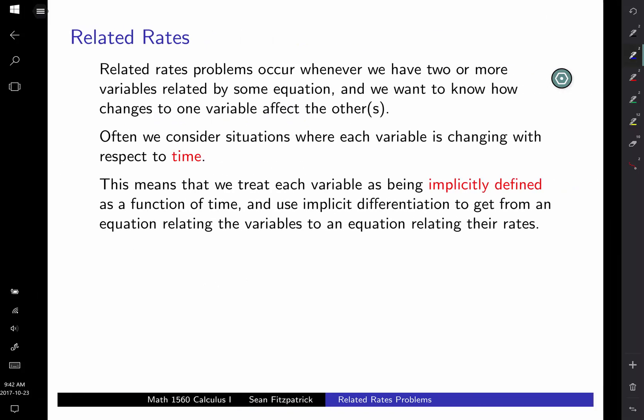So what are these related rates problems? Related rate problems occur whenever we have two or more variables related by some equation. We saw in the previous one we had this equation that related the length of a man's shadow to his position relative to a lamppost. And then you want to know how some of those variables are changing.